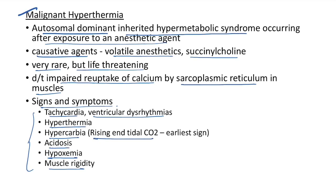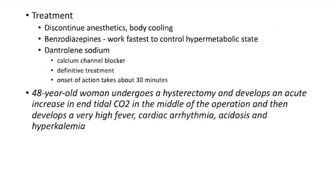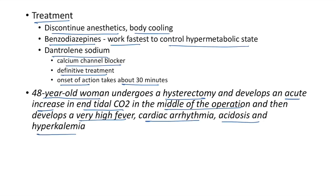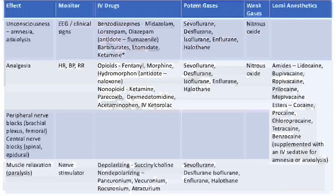Signs and symptoms of malignant hyperthermia include tachycardia, ventricular dysrhythmias, hyperthermia, hypercarbia, acidosis, hypoxemia, and muscle rigidity. Rising end-tidal carbon dioxide is the earliest sign of malignant hyperthermia. Treatment involves discontinuing anesthetics, body cooling, and benzodiazepines work fastest to control the hypermetabolic state. However, dantrolene sodium is the definitive treatment — it is a calcium channel blocker with onset of action of about 30 minutes. A classical case is a 48-year-old woman undergoing hysterectomy who develops acute rise in end-tidal CO2, high fever, cardiac arrhythmia, acidosis, and hyperkalemia.